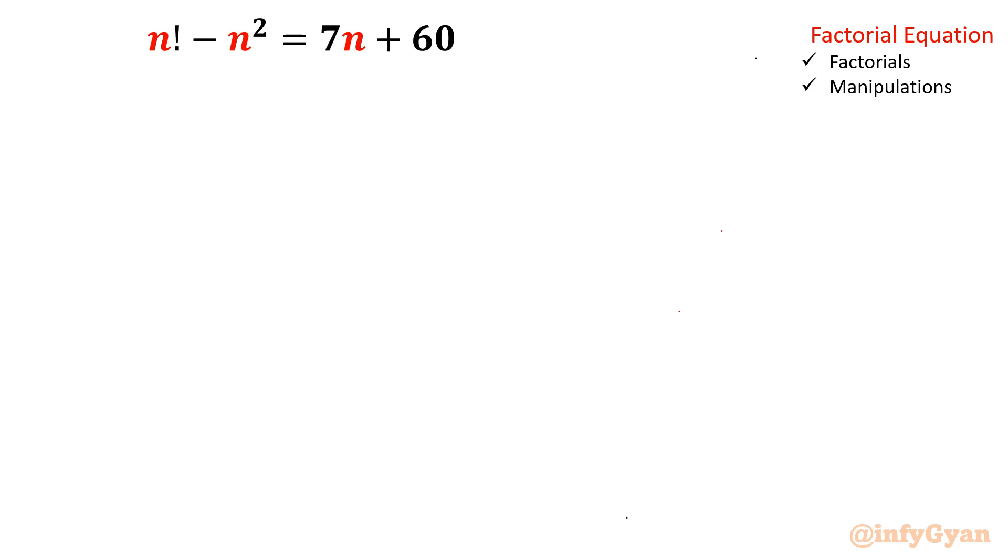Here equation is n factorial minus n square equal to 7n plus 60.